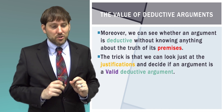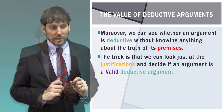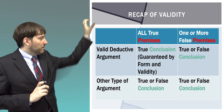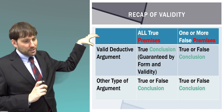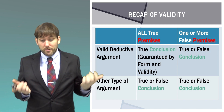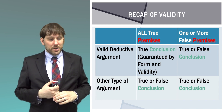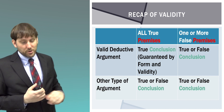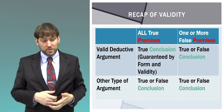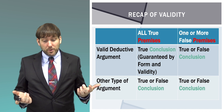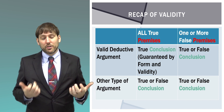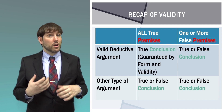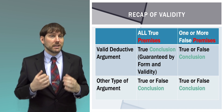Let's recap the concept of validity. With a valid deductive argument, if we have all true premises, we are guaranteed a true conclusion. If we have one or more false premises, the conclusion could be true or false. With any other type of argument, even with all true premises, the conclusion can still be false. In other words, for everything except a valid deductive argument, we don't know just from the premises whether the conclusion is true — we may have a strong reason to believe it, but we cannot guarantee it.